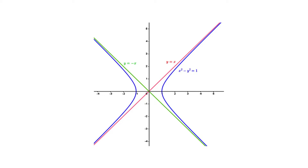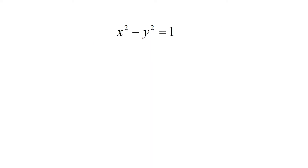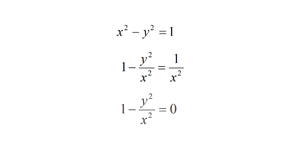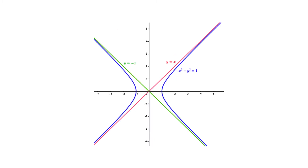There are asymptotes which are neither horizontal nor vertical; they are called oblique asymptotes. For example, the hyperbola x² − y² = 1 has two asymptotes: y = x and y = −x. Indeed, the equation can be rewritten as 1 − y²/x² = 1/x². As x goes to ±∞, the right-hand side goes to 0, giving 1 − y²/x² = 0, which yields y = ±x — two oblique asymptotes.